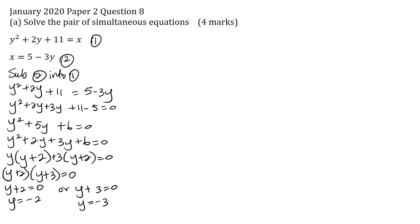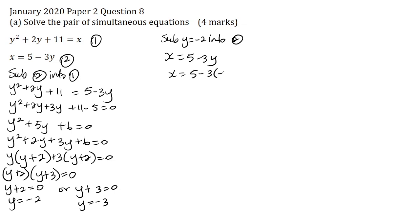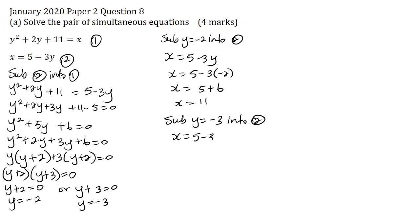Now that I've found the y values, I need to find the x values. I'll substitute y equals minus 2 into equation 2. You can use equation 1, but since it's a non-linear equation it's harder to solve, so use equation 2. x equals 5 minus 3y, so x equals 5 minus 3 times minus 2, giving x equals 5 plus 6, so x equals 11. Now substituting y equals minus 3 into equation 2: x equals 5 minus 3 times minus 3, giving x equals 5 plus 9, so x equals 14.